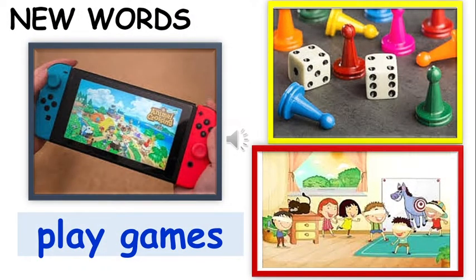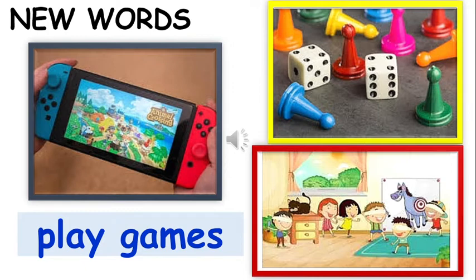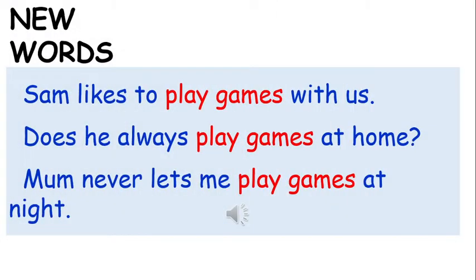First we are going to learn the new words, and then you will see how to make sentences with the new words. The first word is 'play games.' Look at the pictures — these are the games you can play. Here are some sentences using the word 'play games': Sam likes to play games with us. Does he always play games at home? Mum never lets me play games at night.